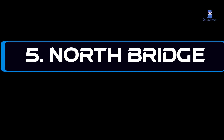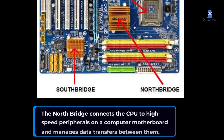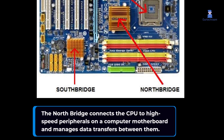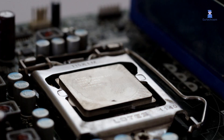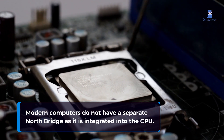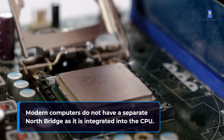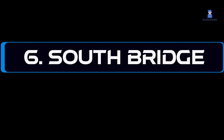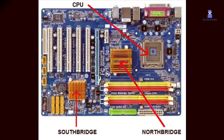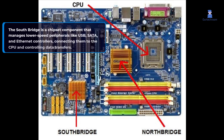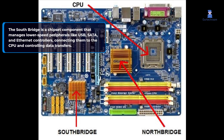5. North Bridge. The North Bridge connects the CPU to high-speed peripherals on a computer motherboard and manages data transfers between them. Modern computers do not have a separate North Bridge as it is integrated into the CPU. 6. South Bridge. The South Bridge is a chipset component that manages lower-speed peripherals like USB, SATA, and Ethernet controllers, connecting them to the CPU and controlling data transfers.